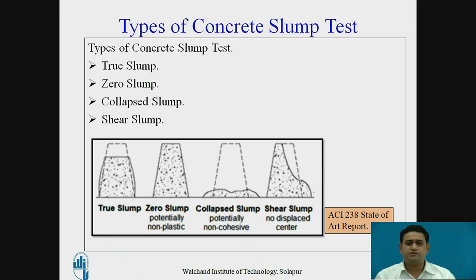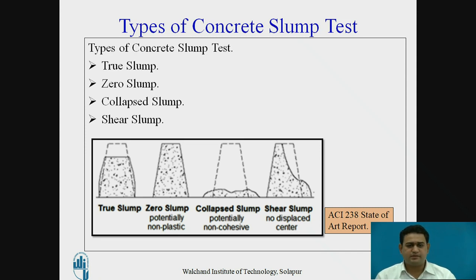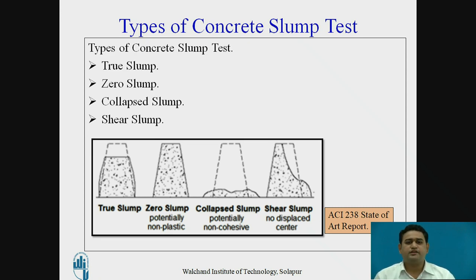There are four types of concrete slump: true slump, zero slump, collapse slump, and shear slump. True slump retains the shape of the cone but subsides very little. Zero slump retains its shape as-is due to its stiffness. Collapse slump means the concrete totally collapses on the base plate. Shear slump is when there is a subsidence or fall of the concrete along an inclined plane.